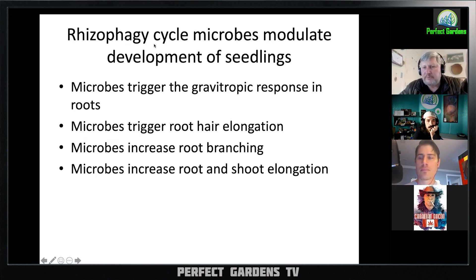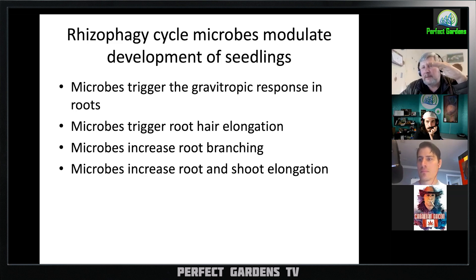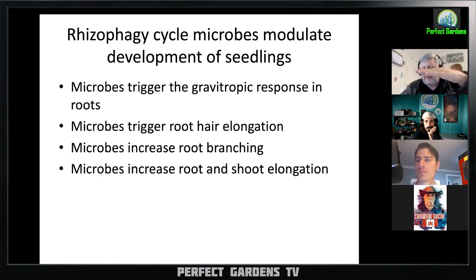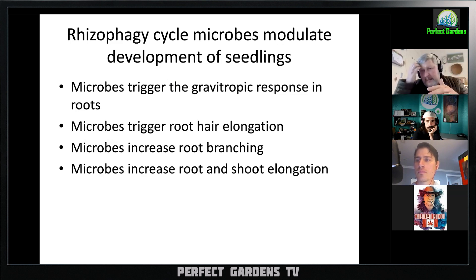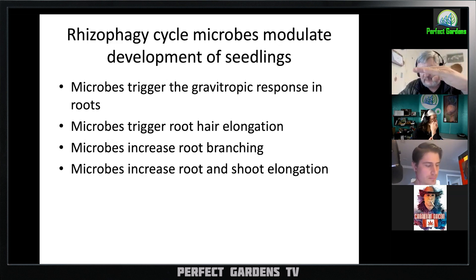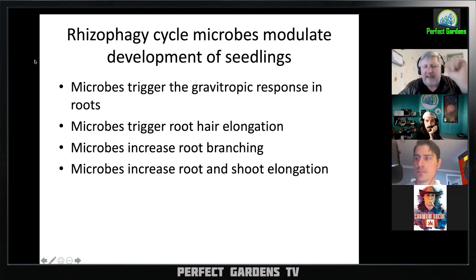If you take away all the microbes from plants, the plants don't develop correctly. The roots don't form correctly — oftentimes the roots will lose the gravitropic response. Normal roots grow down into the soil, but if you take away all the microbes, they'll stay on the surface or in some cases go into the air. They also will not form root hairs without bacteria. There's no hair forming. That's a direct effect of those microbes.